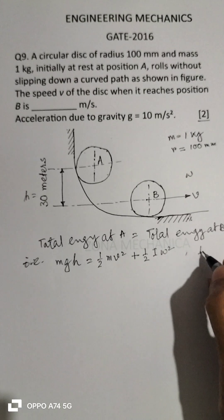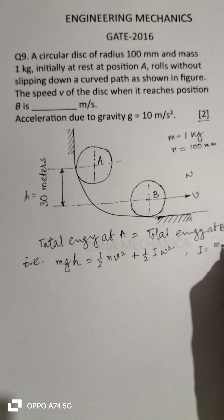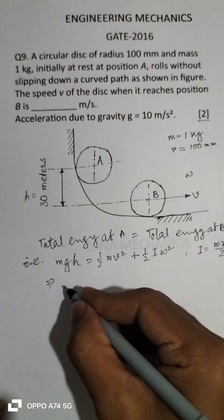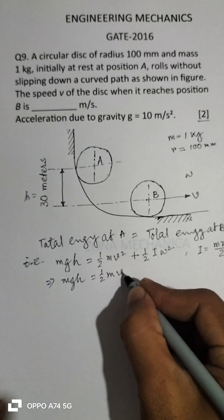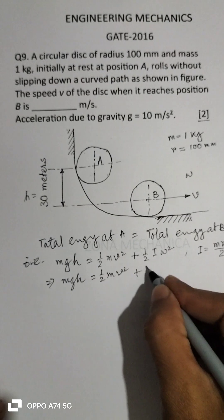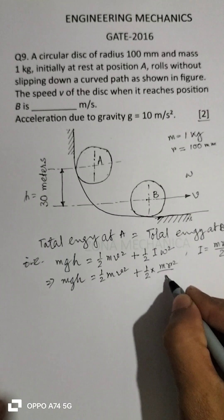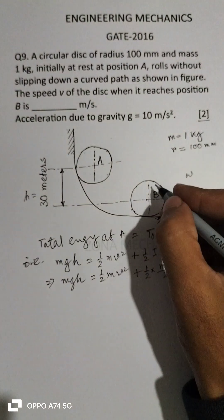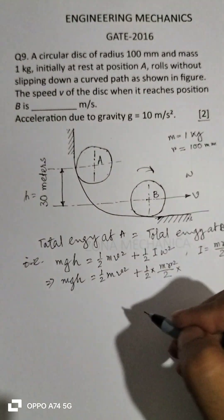I is the mass moment of inertia. For a disk, it is mr²/2. So this implies mgh equals ½mv² plus ½·(mr²/2)·ω².